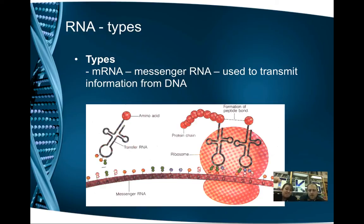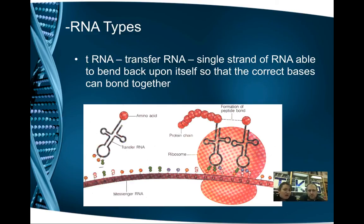When the DNA unzips and the RNA nucleotides bond in, it creates a single strand that can then leave the nucleus and go out into the cytoplasm. That's where messenger RNA heads, and it starts connecting with transfer RNA. The transfer RNA bends back upon itself.